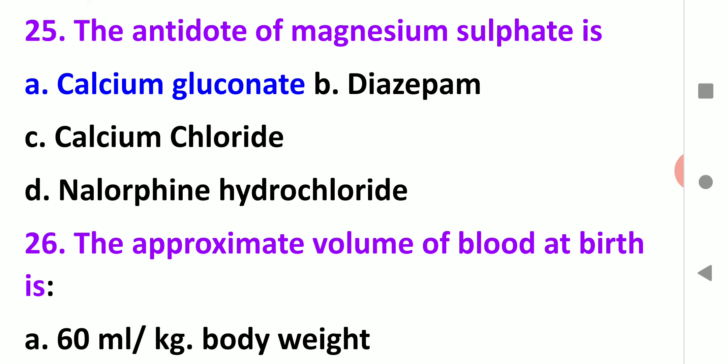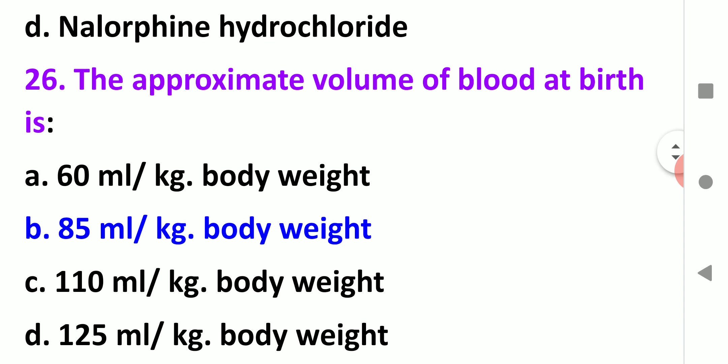The antidote of magnesium sulfate is calcium gluconate. Magnesium sulfate is mostly given to pre-eclampsia or eclampsia patients with seizures. We mostly give pregnant ladies during labor. And if they give a lot of magnesium sulfate, we give calcium gluconate as an antidote.